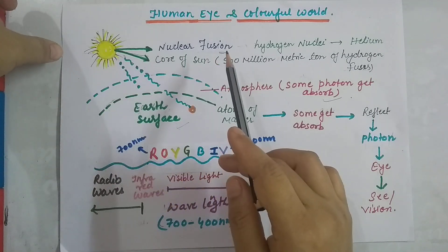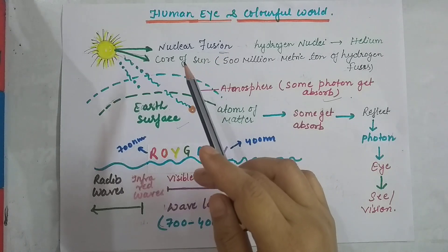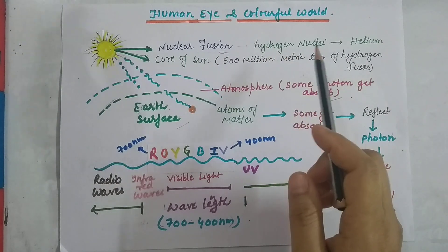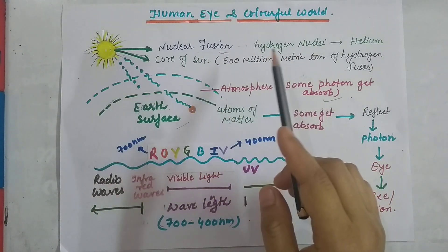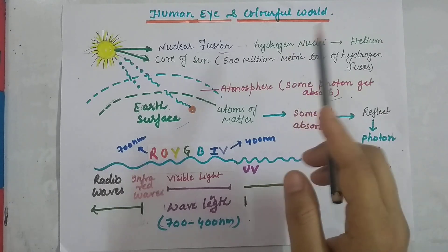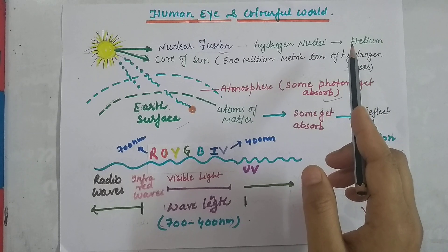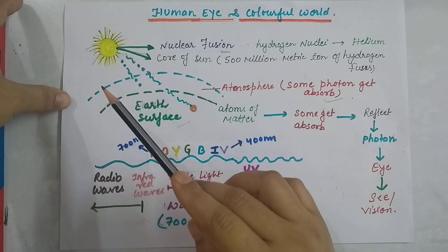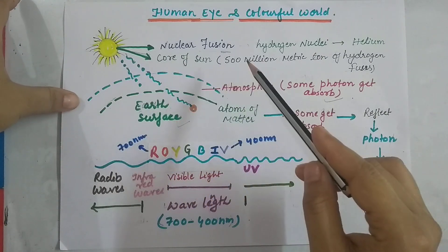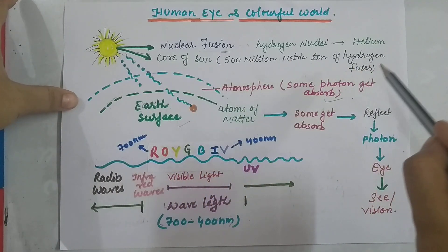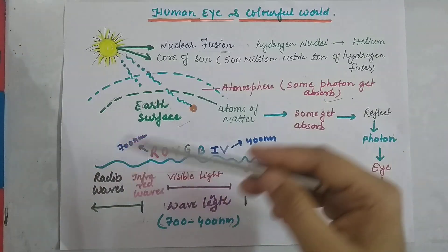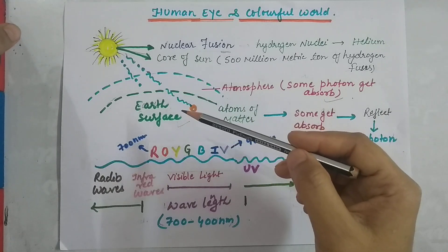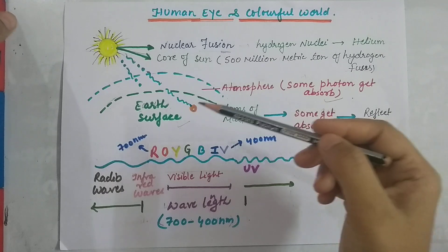Nuclear fusion is basically when two small nuclei join and fuse. The nuclei of hydrogen atoms get fused and produce helium. This phenomenon regularly occurs inside the sun. In the core of the sun, 500 million metric tonnes of hydrogen get fused, and due to this regular process we get lots of energy in the form of light or radiation.